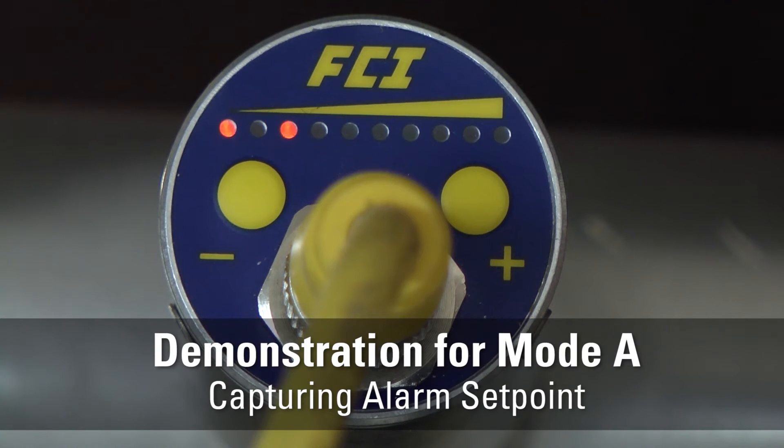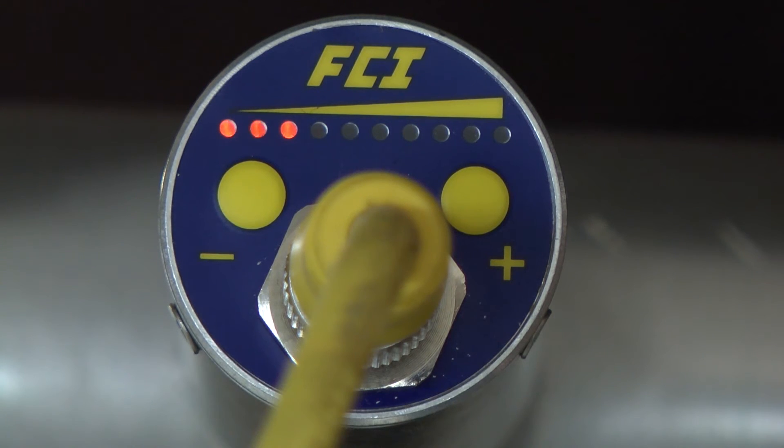Demonstration for Mode A: capturing an alarm setpoint. Assume a low flow alarm in a typical line, so we will use the plus button for higher heater excitation level.